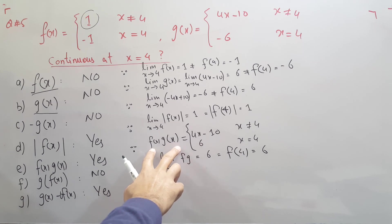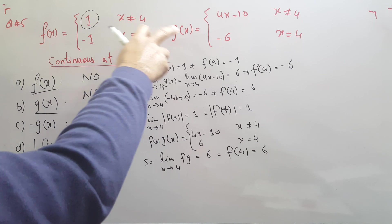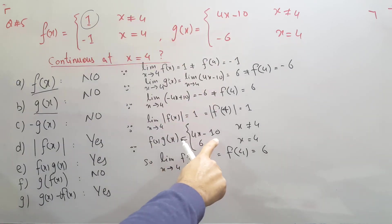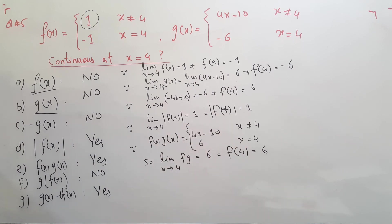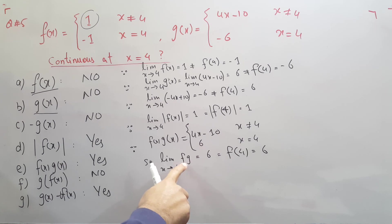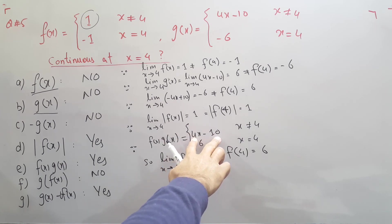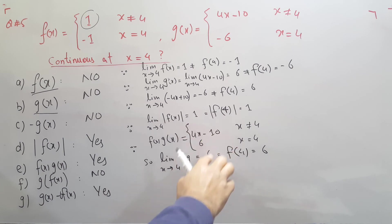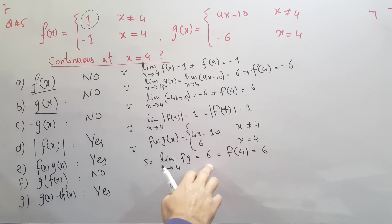For the product f(x)·g(x), multiplying the two functions gives 4x − 10 + 6 when x = 4. Applying the limit as x approaches 4 and substituting gives 16 − 10 = 6, and the function value at x = 4 is also 6. Since both values are equal, the product f·g is continuous at x = 4.